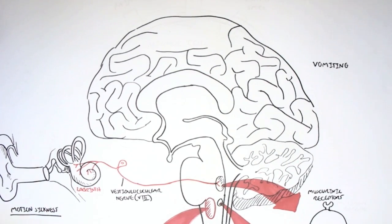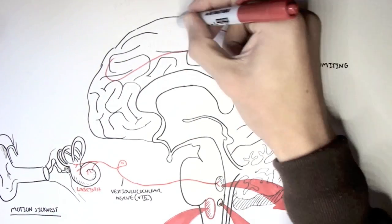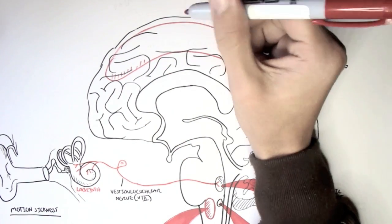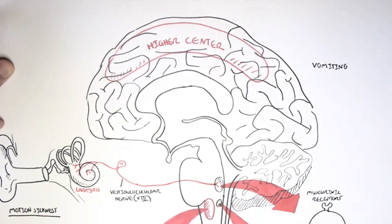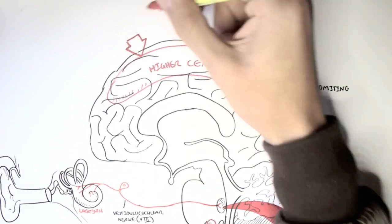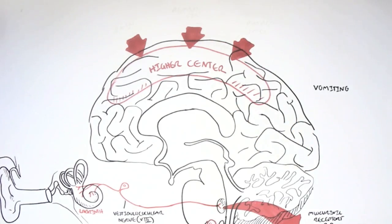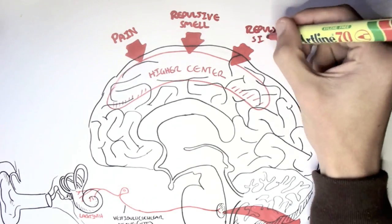Other impulses that can activate the vomiting center, or stimulate the vomiting center, are afferent impulses coming from the higher centers of the brain, so from around here. They mediate the emetic response due to pain, foul smell, or putrid sight, and even memory.